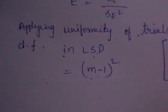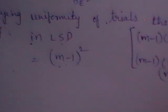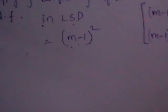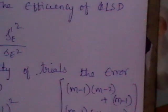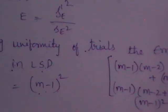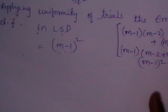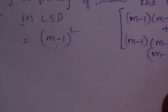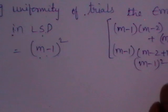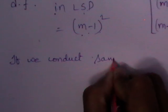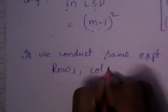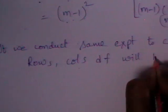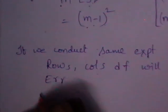Now we need to find the degrees of freedom in CRD. In CRD there is no local control — there are no rows or columns acting as blocks. The sources of variation in CRD are only treatments, error, and total. So both the row degrees of freedom and column degrees of freedom must be added to the error degrees of freedom in CRD.